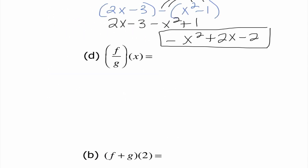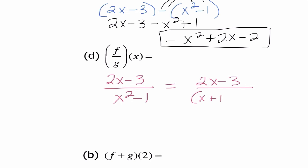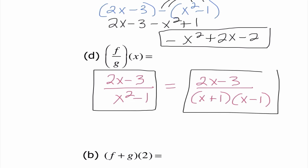For d, we divide, so I'm going to do 2x minus 3 over x squared minus 1. You may remember this is called a rational function, which we learned in Algebra 2. The only way to reduce a rational function is if we have common factors. I cannot factor the numerator, and factoring the denominator to x plus 1 times x minus 1 doesn't help since there's no common factor in the numerator. So 2x minus 3 over x squared minus 1 is our final answer.